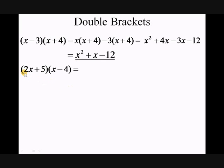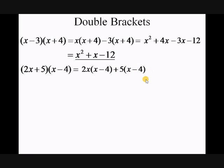Now look at the second example. Again, what I'm going to do is multiply 2x by the bracket (x minus 4), and plus 5 by the bracket (x minus 4). This is what it's going to look like: 2x times (x minus 4) plus 5 times (x minus 4), and I'm going to work them out as single brackets again.